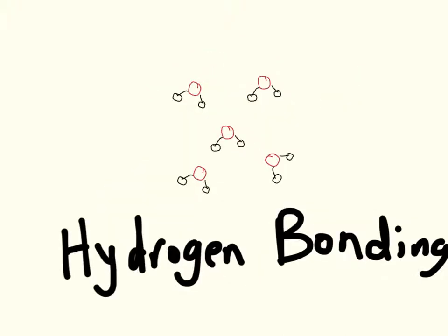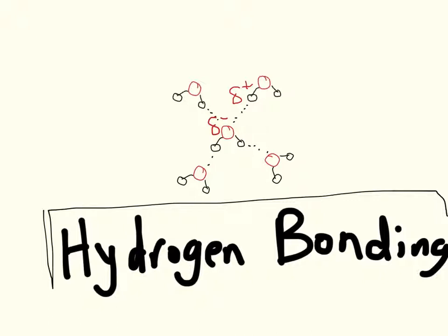What's so special about this dipole? It allows the partially positive hydrogen atom of one water molecule to bond with the partially negative oxygen atom of another water molecule. And this intermolecular bond is called a hydrogen bond and is the strongest intermolecular bond, even though it's still much weaker than the covalent bond that's found within a water molecule.